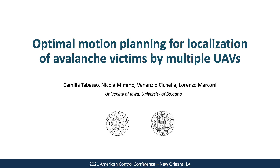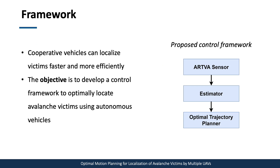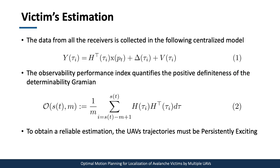In this short presentation, I introduce our work on optimal motion planning for localization of avalanche victims by multiple UAVs. We look at search and rescue missions for avalanche victims — time-critical tasks where the objective is to develop a cooperative control framework allowing a fleet of UAVs to optimally locate the victims. The framework has two main components: an estimator and a trajectory planner. For the estimation problem, we consider a victim equipped with a transmitter generating a magnetic field, and N UAVs with receivers. The output from the receivers is collected in a centralized model shown in equation 1, where x is the vector to estimate and delta and v represent model approximation error and GPS noise, respectively.